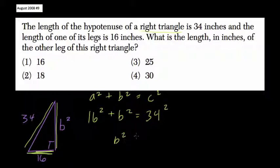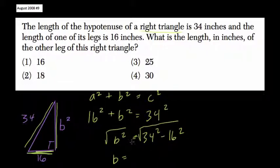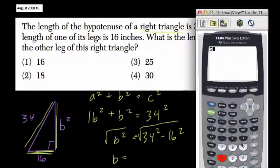So then b squared equals what? Well, it equals 34 squared minus 16 squared. So now we want to know what b equals, take the square root of both sides. So the square root of b squared is b. Here on this right-hand side, you want to find the difference before you take the square root.